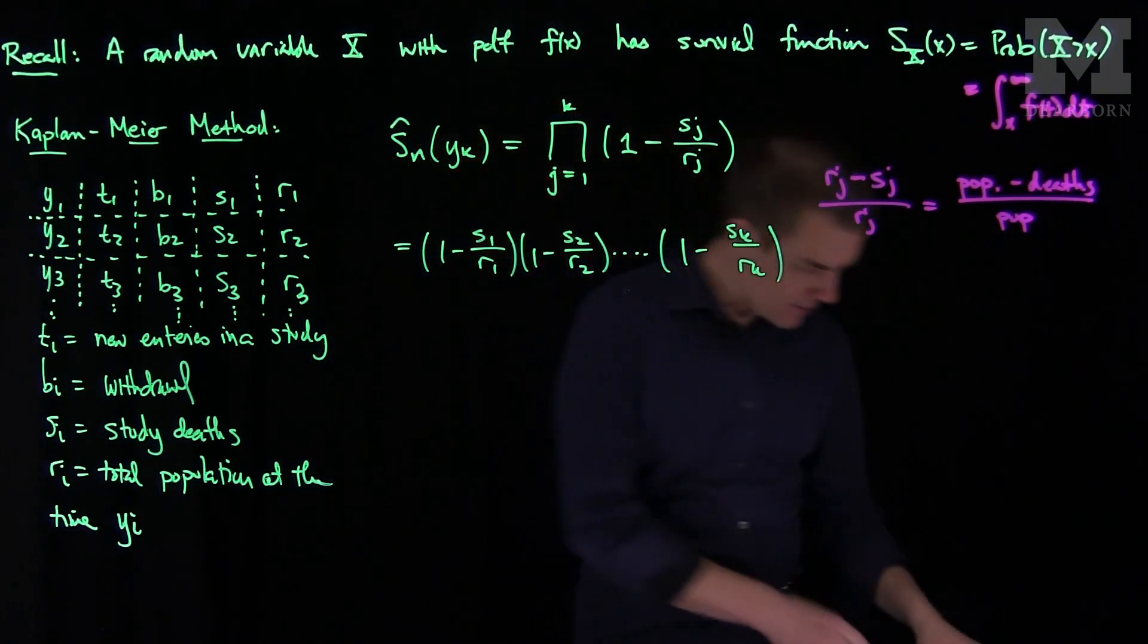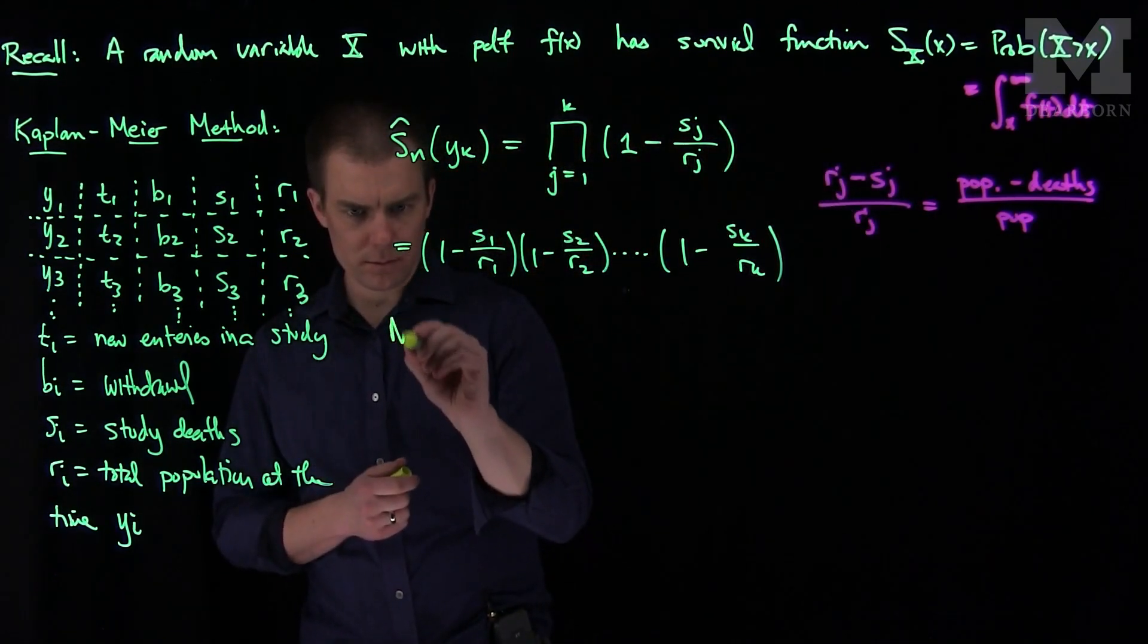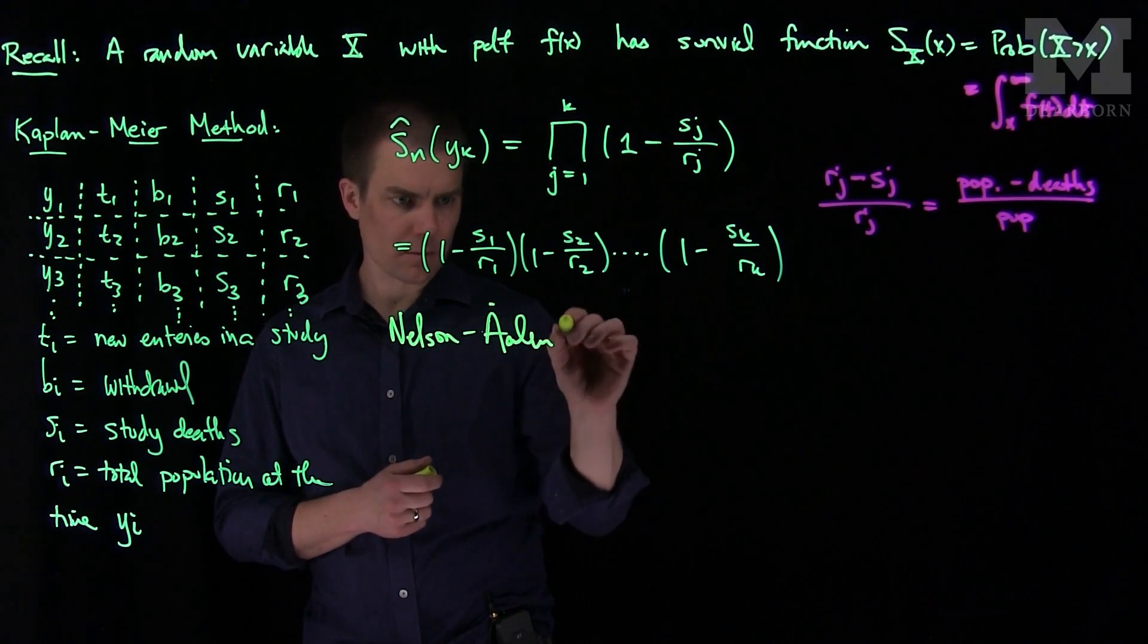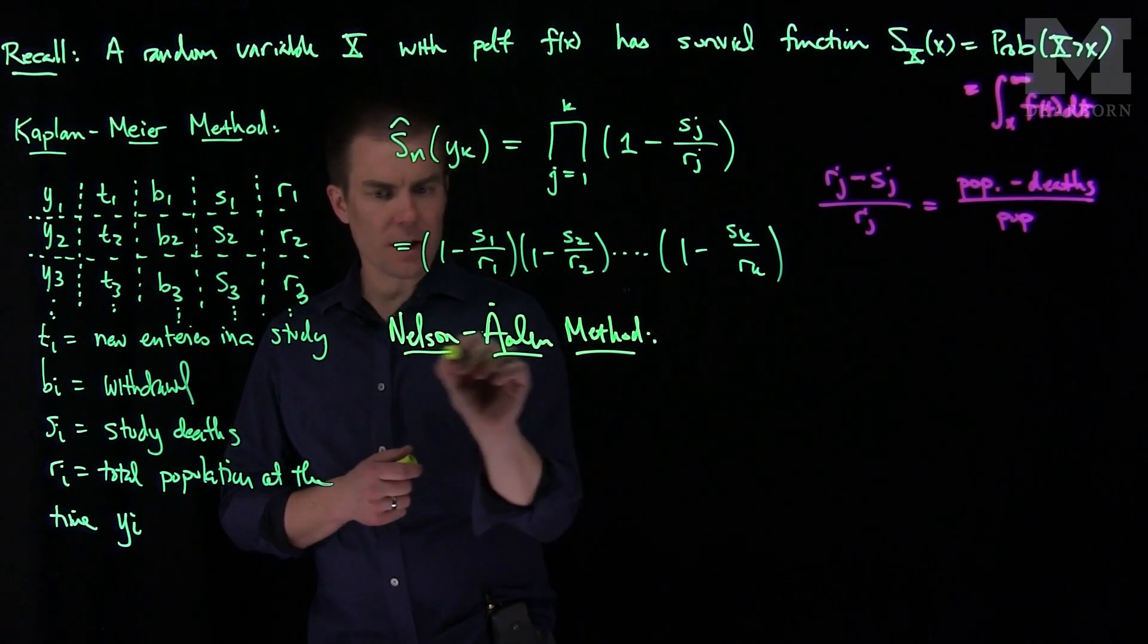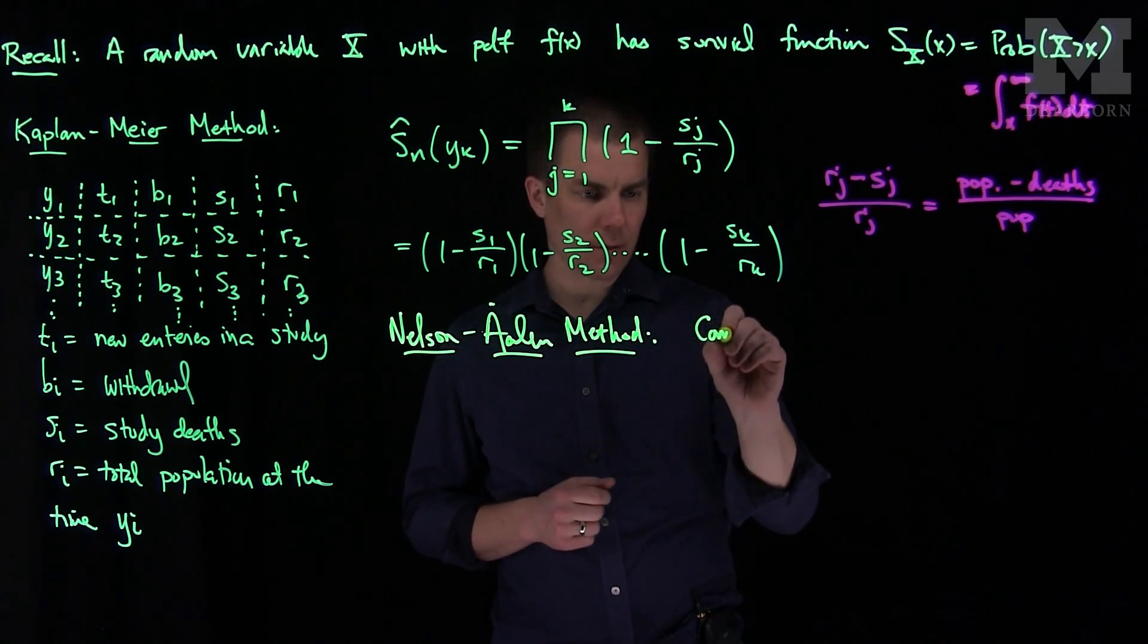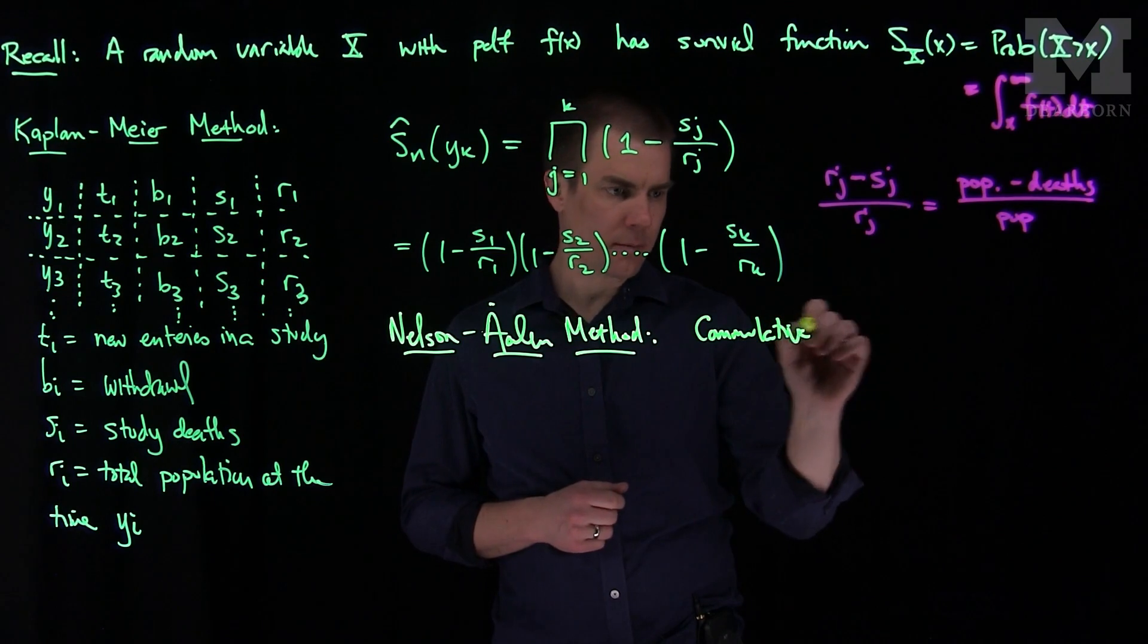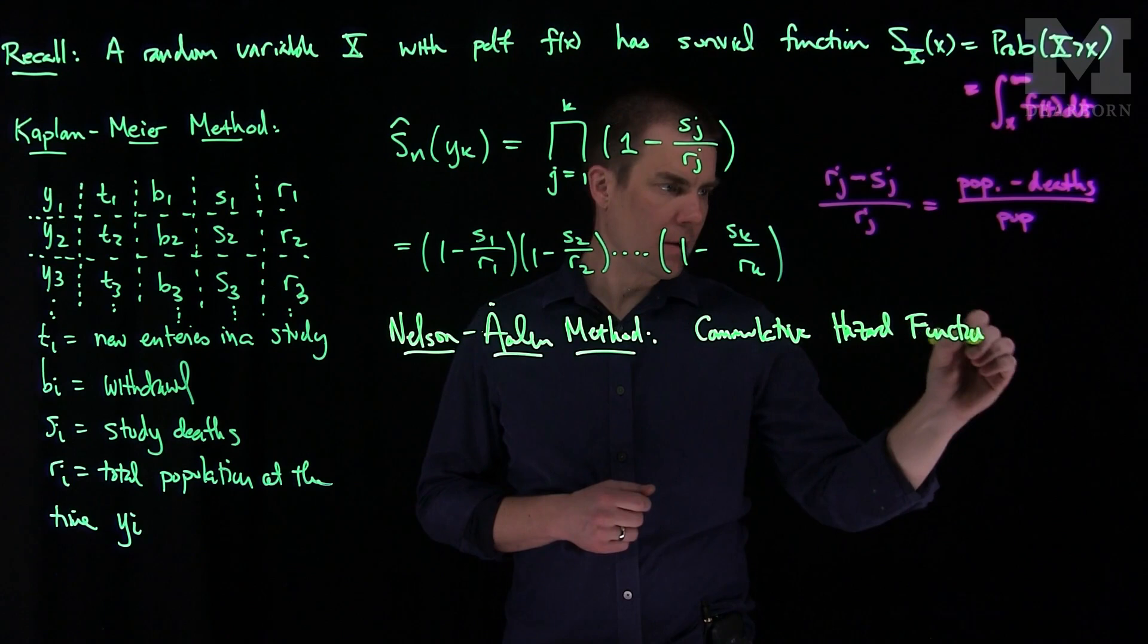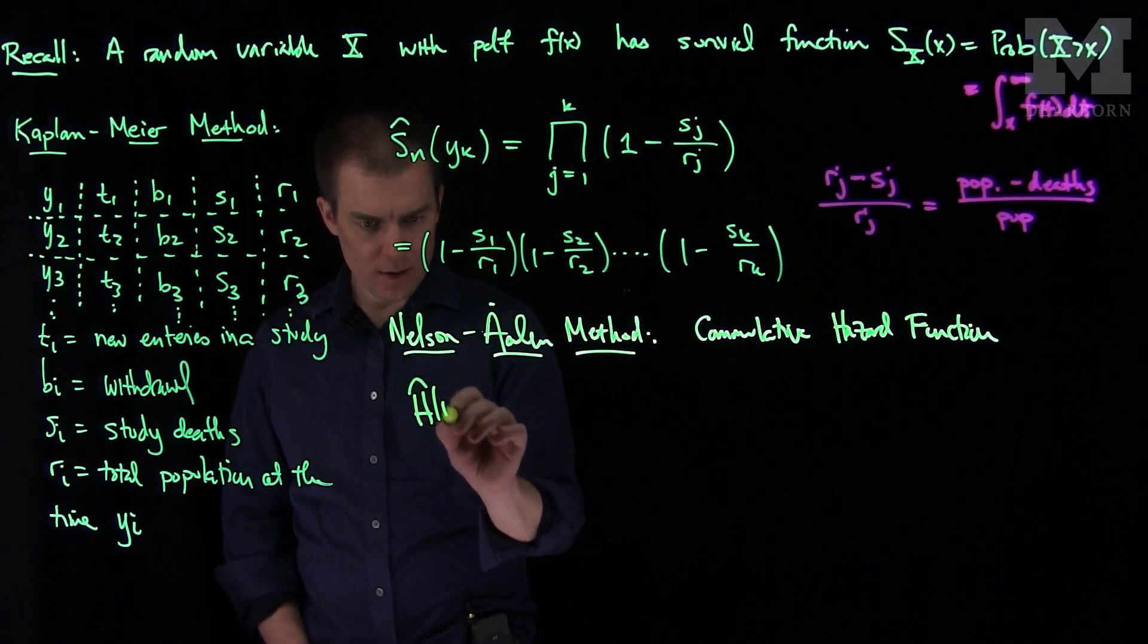The second method is the Nelson-Aalen method. And what this method does is it computes the, approximates the cumulative hazard function.